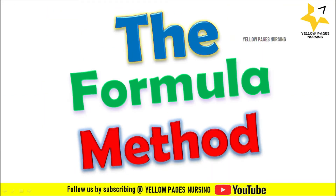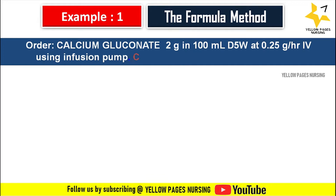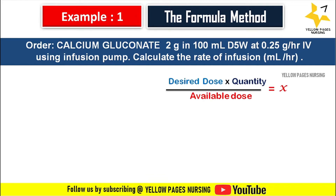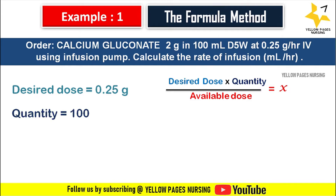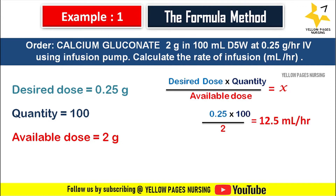Using the formula method, let's discuss the first example. Doctor's order: calcium gluconate 2 gram in 100 ml D5 water at 0.25 gram per hour IV using infusion pump. Calculate the rate of infusion, that is ml per hour. The formula is: desired dose multiplied by quantity, divided by available dose, equals X. Here, desired dose is 0.25 gram, quantity is 100, available dose is 2 gram.